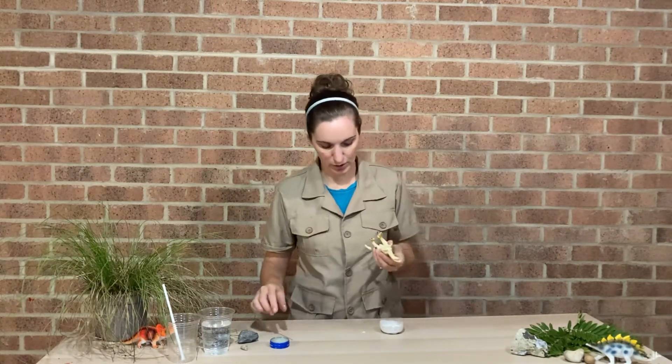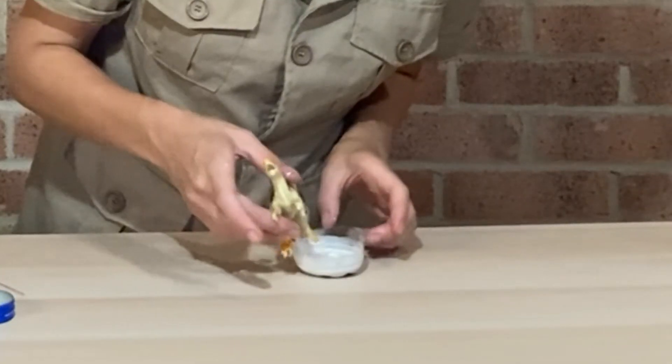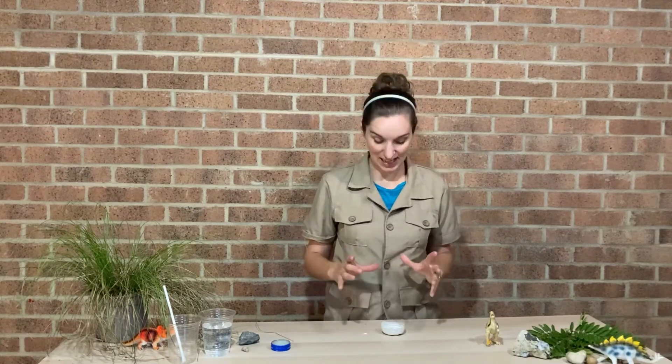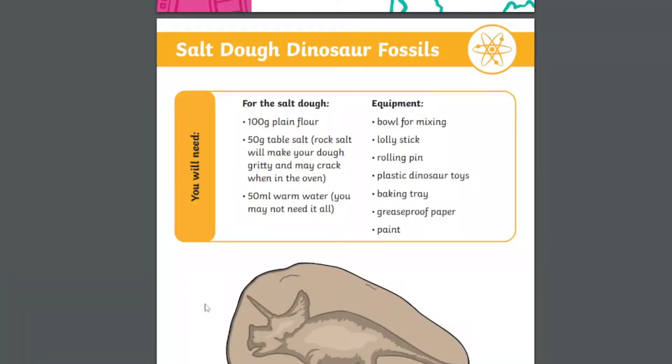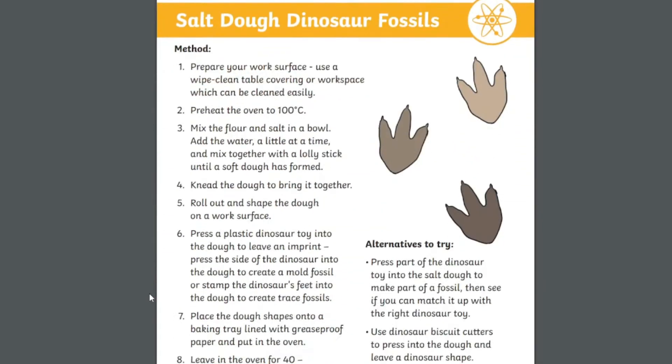I'm just going to put a little dinosaur footprint in next to it as well. Now I'm going to leave that to set and we'll see if we've made a fossil at the end. If you don't have any plaster of Paris, you can actually make trace fossils using salt dough, which is really easy to make using flour, salt, and water — the instructions for how to do that are on the Twinkl website.